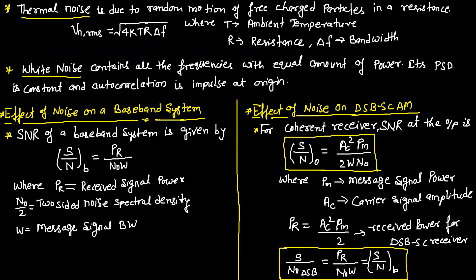Thermal noise is due to the random motion of free charged particles in a resistance. V_rms is equal to the square root of 4KT·R·ΔF, where T is ambient temperature, R is resistance, and ΔF is bandwidth. White noise contains all frequencies with equal power, so its PSD is constant and its autocorrelation is an impulse at the origin.